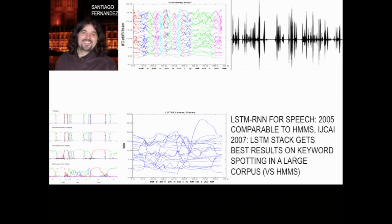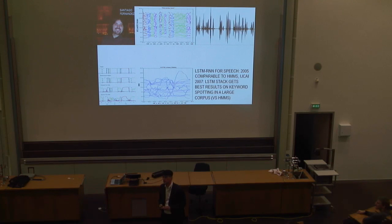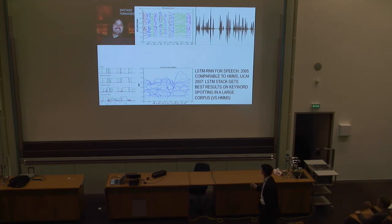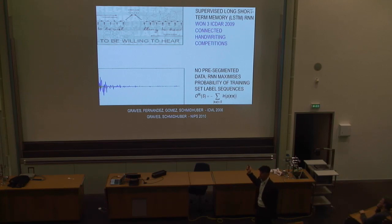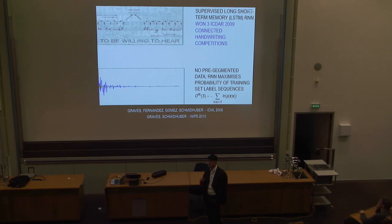In 2007, we had the best results on keyword spotting in a large corpus — keyword spotting is when you listen to telephone speech and hear a word such as 'Al-Qaeda' and a red flag is raised. This has not only military applications but also commercial applications. Then in 2009, for the first time, a recurrent neural network won one of these international competitions — about handwriting recognition at the ICDAR conference.